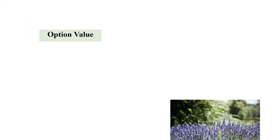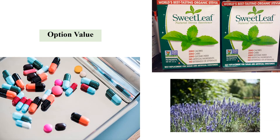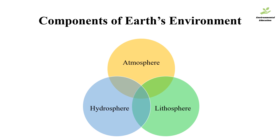And finally, the option value of nature. Option value means all the various possibilities that we can gain from natural products. For example, a very famous sweetener found in the market nowadays called stevia is basically a plant-derived product, which is a natural sweetener. Various drugs and medicines are also sourced from natural products — for example, various cures for diseases like cancer are also being explored in the natural world.